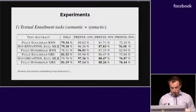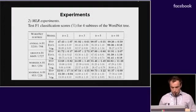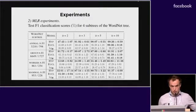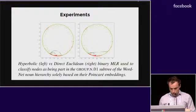In a set of experiments, we outperform all the Euclidean baselines on textual entailment tasks, both semantic and syntactic, and also on classification of subtrees of the WordNet tree. This is done on pre-trained hyperbolic embeddings.